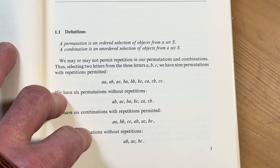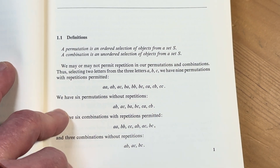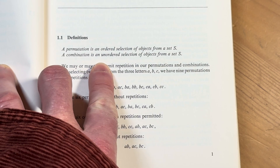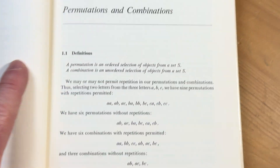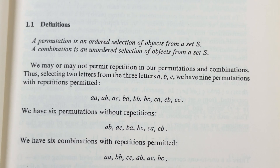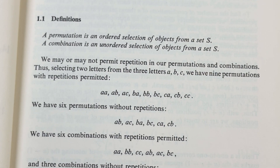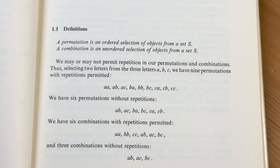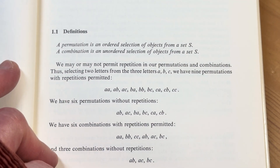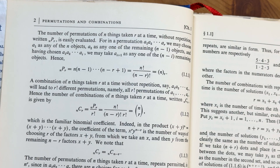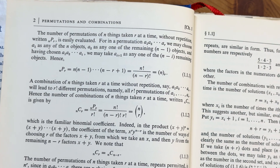It looks fairly clean — it starts with things you're probably familiar with. A permutation is an ordered selection of objects from a set S. A combination is an unordered selection of objects from a set S. I like how he starts right away with the actual definition, because a lot of times people don't really know what they're doing when they're using the formulas. We may or may not permit repetition. And then right away, here are the formulas — boom. He just proves the formula right there.